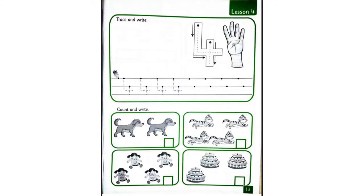Okay, KG1. Open your play and learn book, page 13. In this picture, we are going to trace and write. You're going to trace number four. Let's count. First, how many fingers do we have here? One, two, three, four. Great. Next, let's trace the big number four.